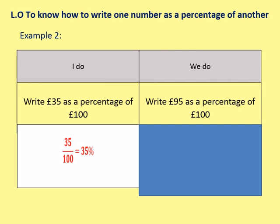Okay, next I do. Write £35 as a percentage of 100. So we've got 35 out of 100, which is simply 35%.